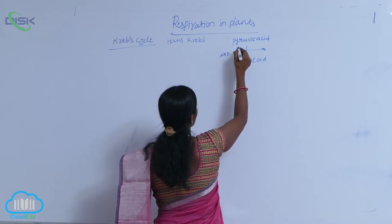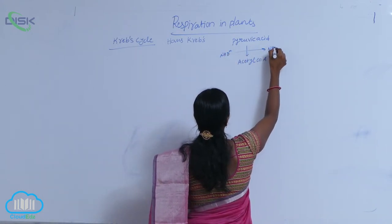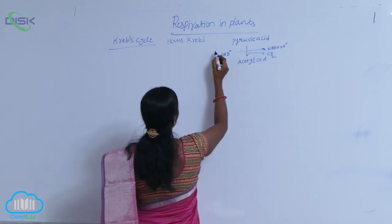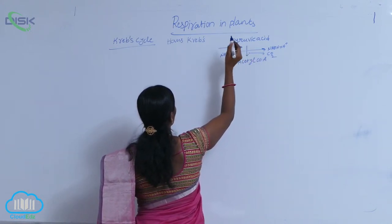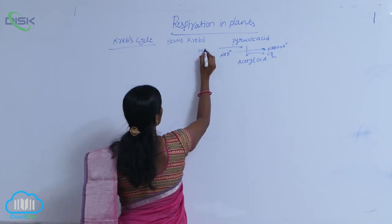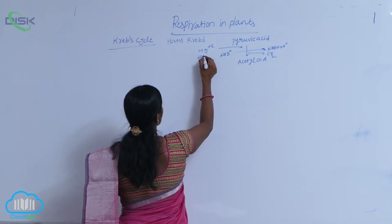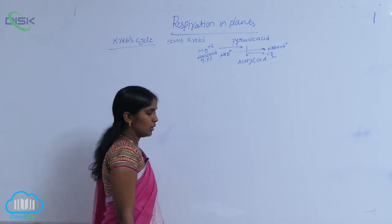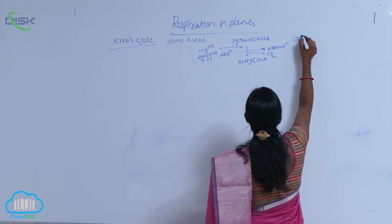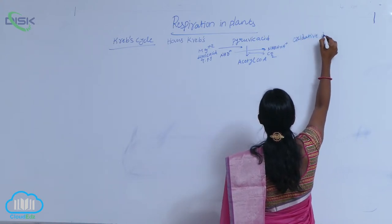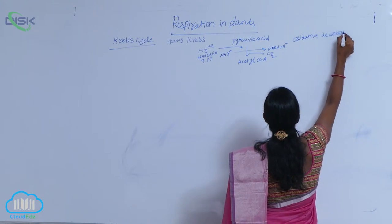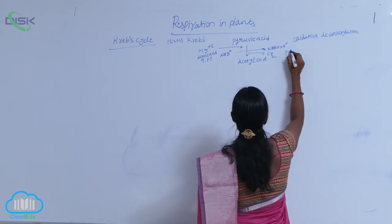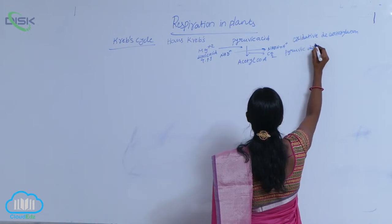NAD is the coenzyme. NAD plus NADH + H+ is released, and CO2 is released here. The required cofactors and coenzymes are Mg2+ ions, lipoic acid, and thiamine pyrophosphate. The reaction here is an oxidative decarboxylation reaction. What is the enzyme involved? The enzyme involved is pyruvate dehydrogenase.